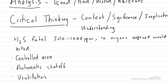Let's say we've come up with three potential solutions of controlling the area, having an automatic shut off and having ventilation. We can then apply our process to them as well so we can analyze these pieces of information and do some critical thinking about which one would be the best solution.